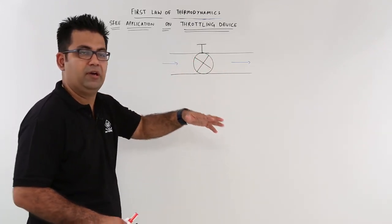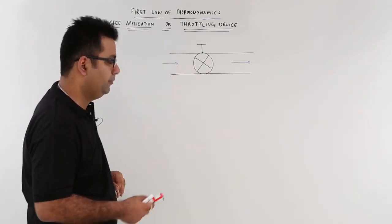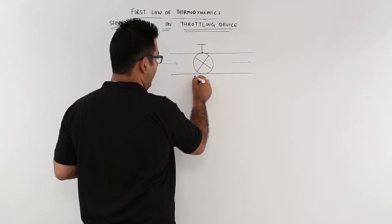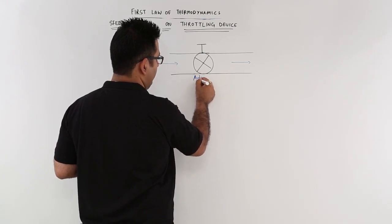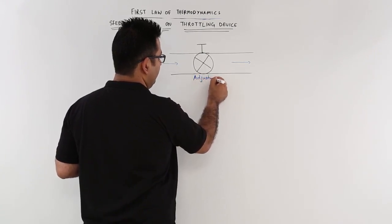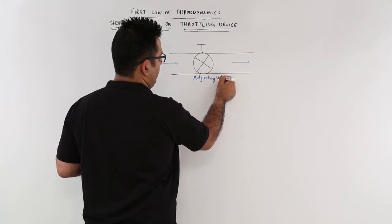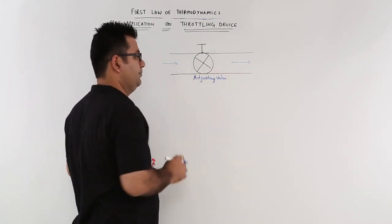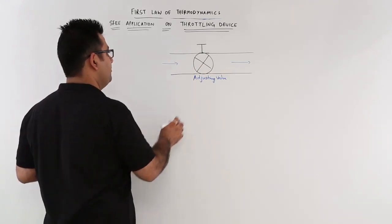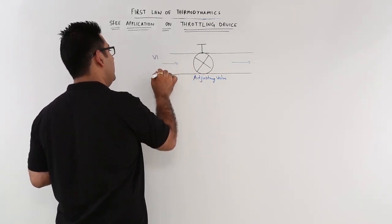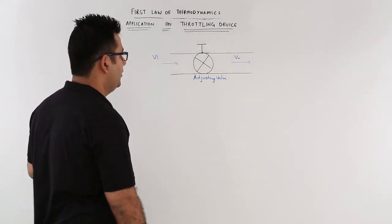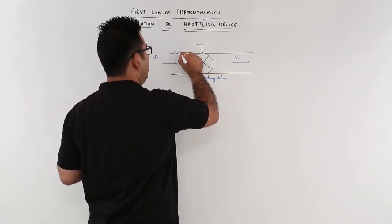You can have water, you can have steam flowing through the pipeline. And you see on the board is an adjusting valve. So you can adjust this valve to throttle the flow of the fluid on both sides. So let us say on this side you have velocity V1 and on this side you have velocity V2.